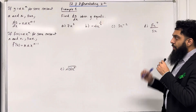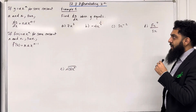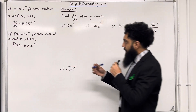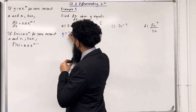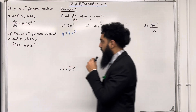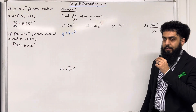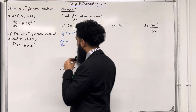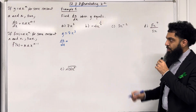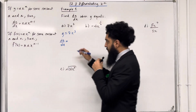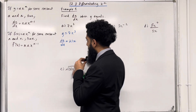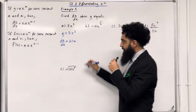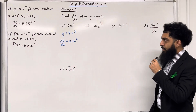Let's have a look at Example 1. Find dy over dx when y equals — part A: 7x cubed. So we've got y equal 7x cubed. We want to work out dy over dx. So dy over dx equals — bring down the power: 3 times 7 is 21, x to the power 3 minus 1, which is 2. This completes part A.